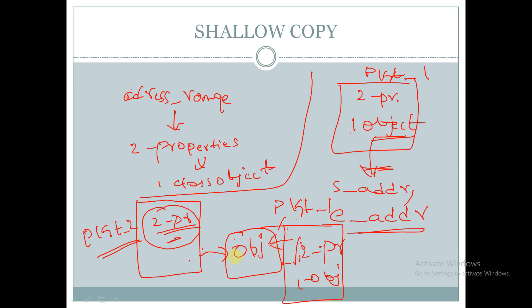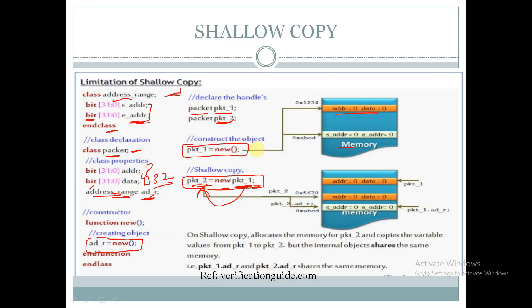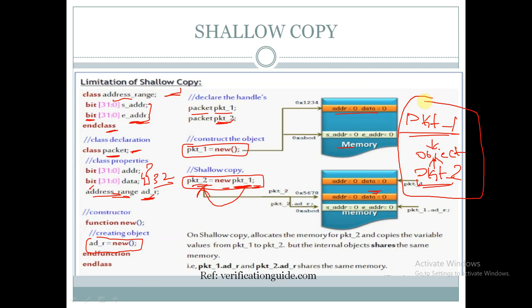In shallow copy, pkt_one and pkt_two share the same internal object. What happens is the internal objects share the same memory — they are not independently created. The two packet handles pkt_one and pkt_two will point to the same object, whereas for properties a separate memory is created for each handle. Due to this, any changes made to the object using pkt_two will be reflected in pkt_one as well, since the object is not copied in shallow copy.